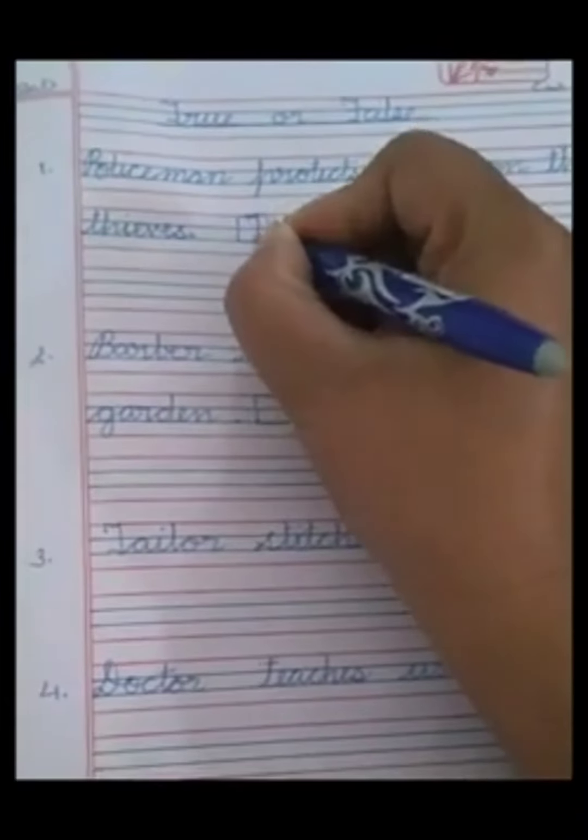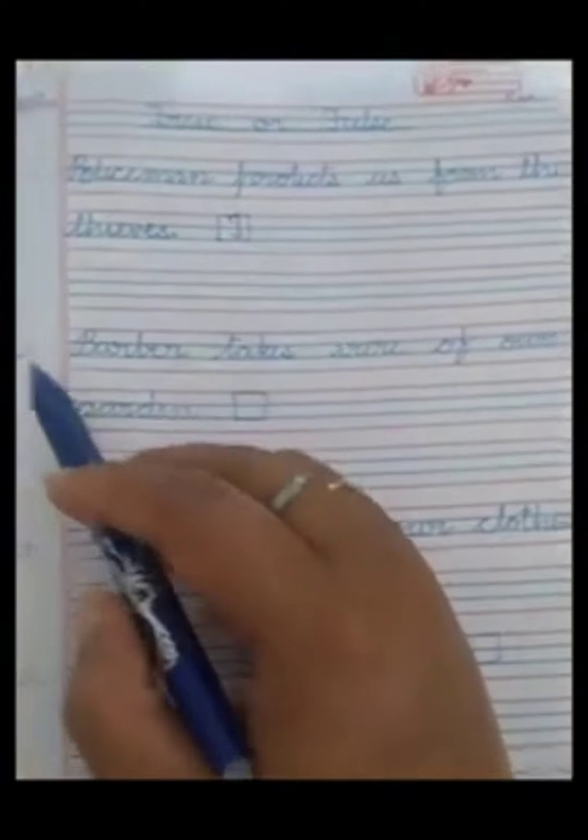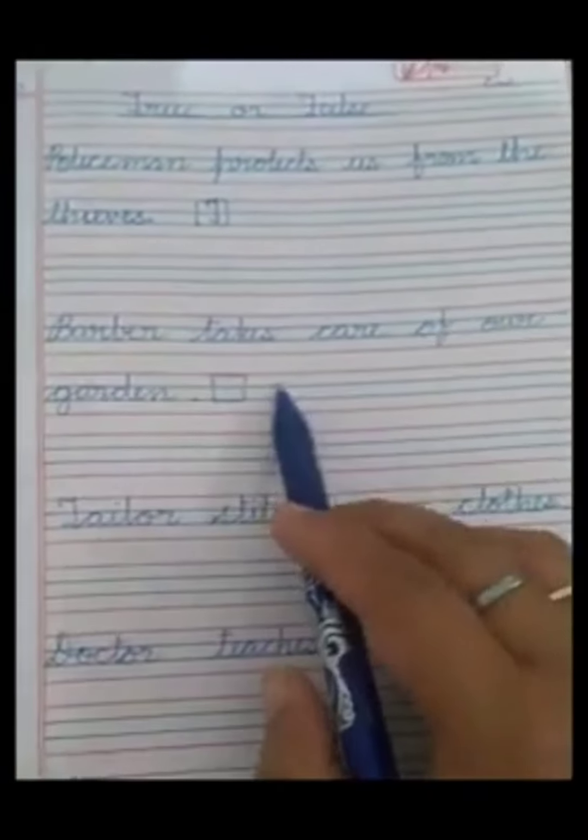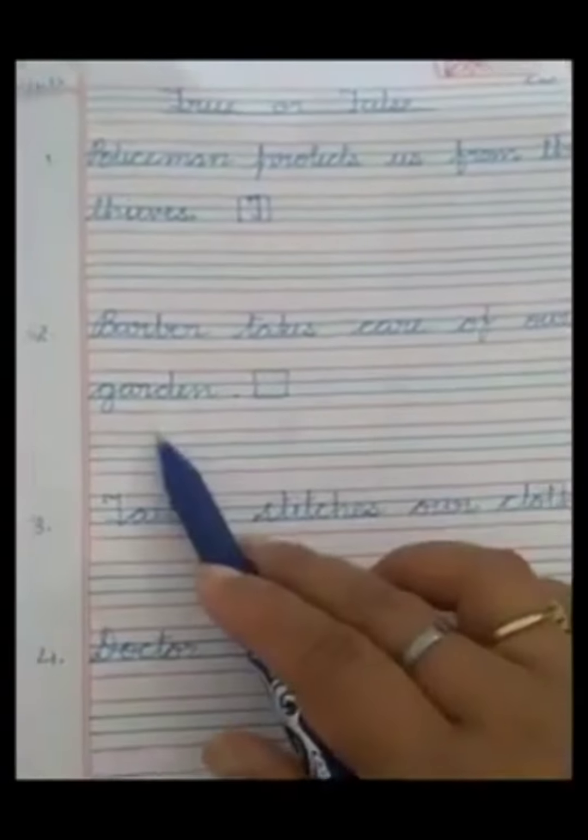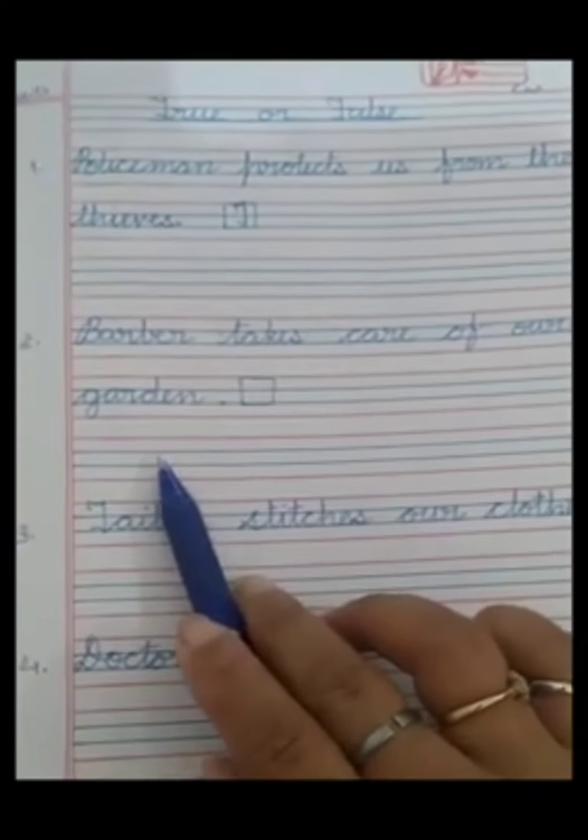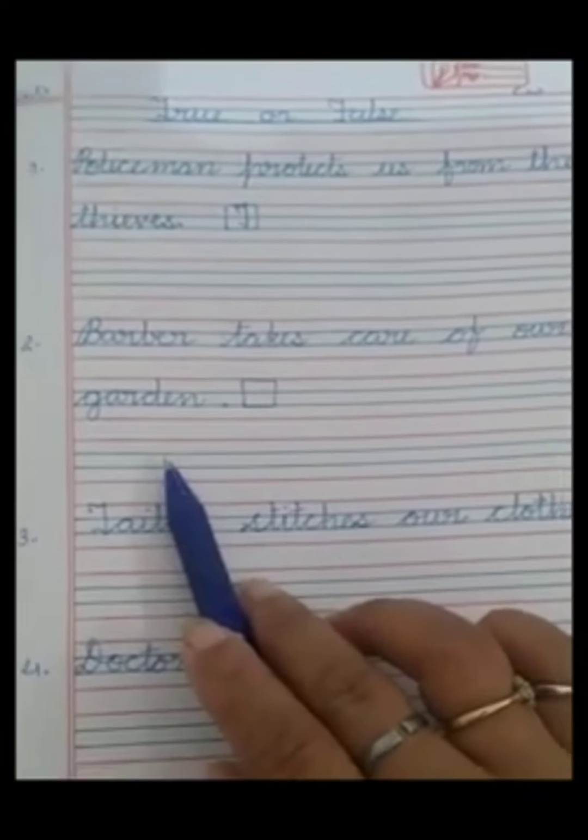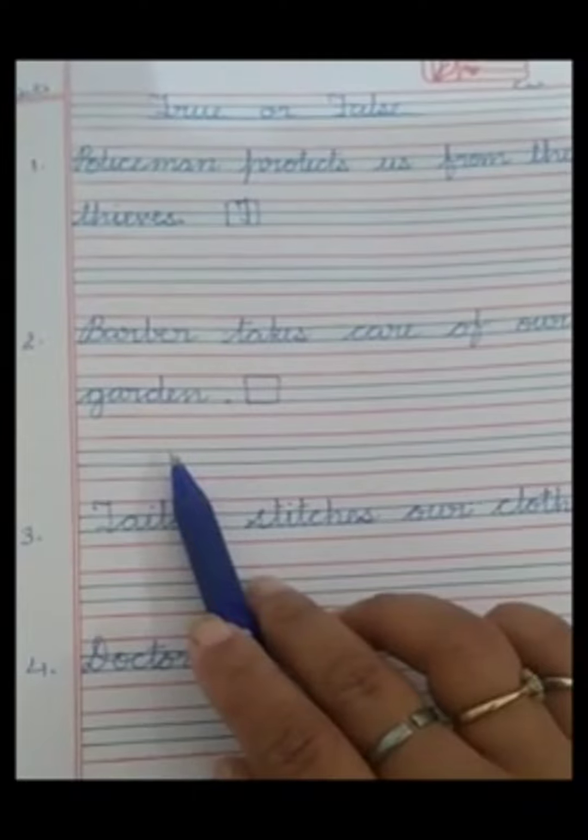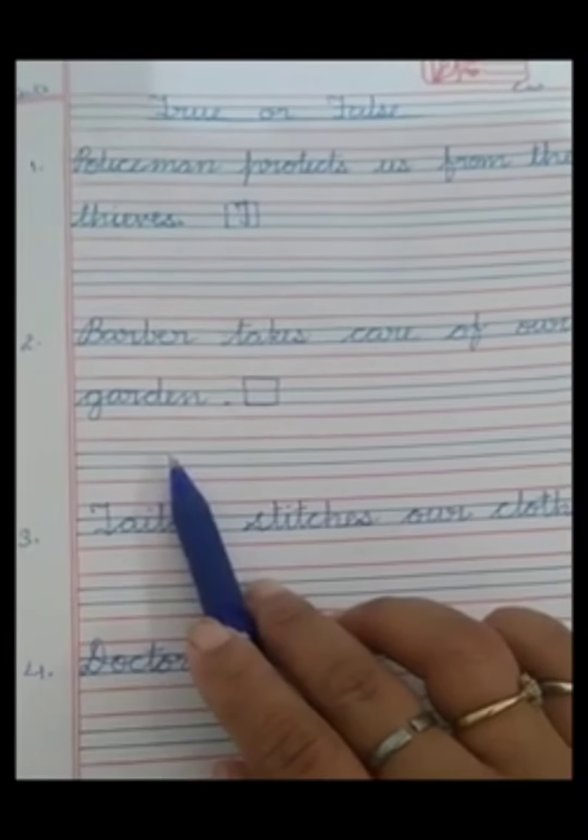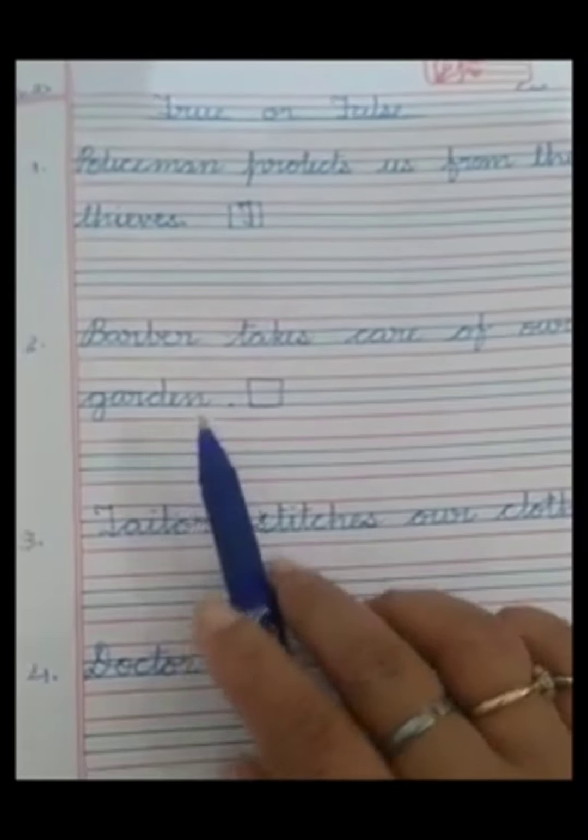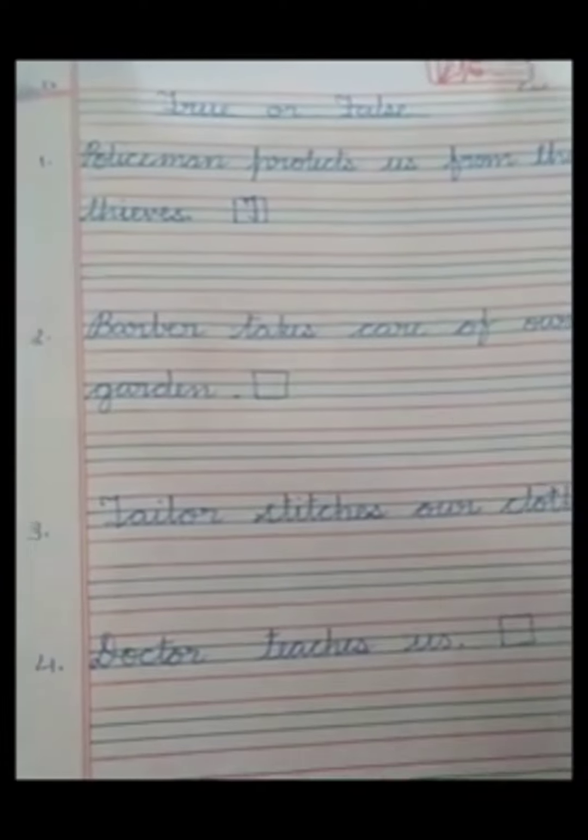Then number two is: barber takes care of our garden. Oh, barber takes care of a garden or takes care of our hair? Yes, barber takes care of hair, not the garden, so it is a false statement. The sentence is false, we will write here false.